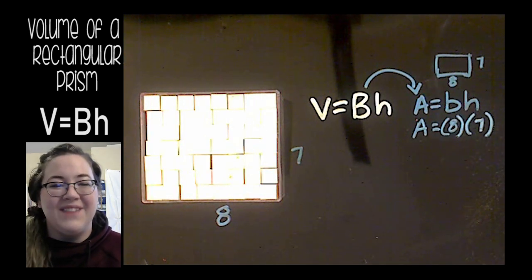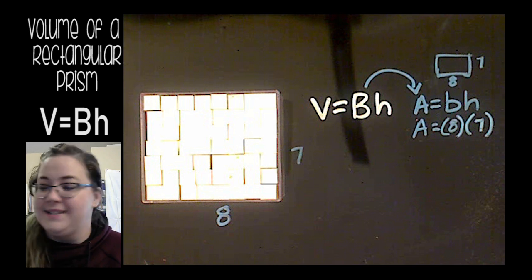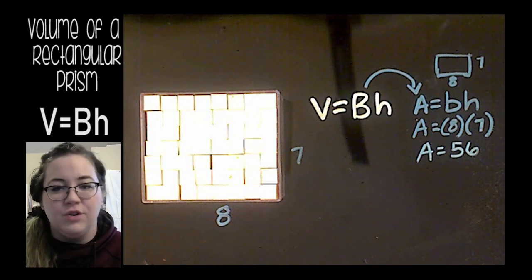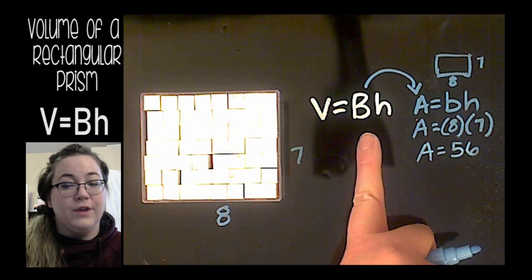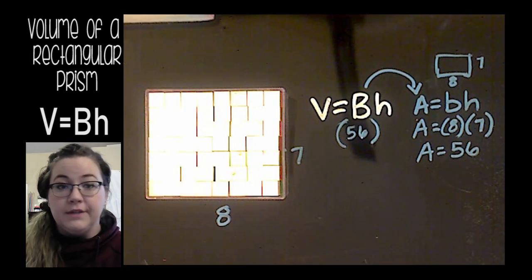Area equals eight times seven. Eight times seven is 56. So the area of my base, the area of my rectangle, is 56 cubes. I'm going to put that here for capital B. Now I just need to fill in the rest of it.